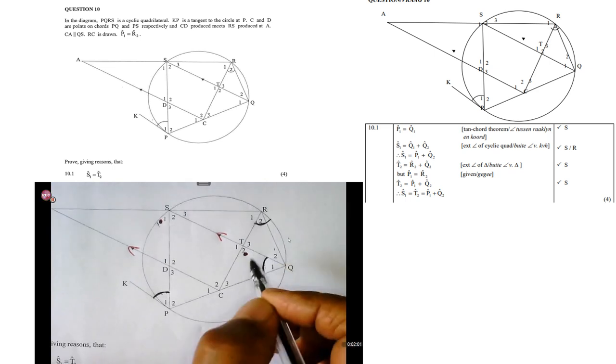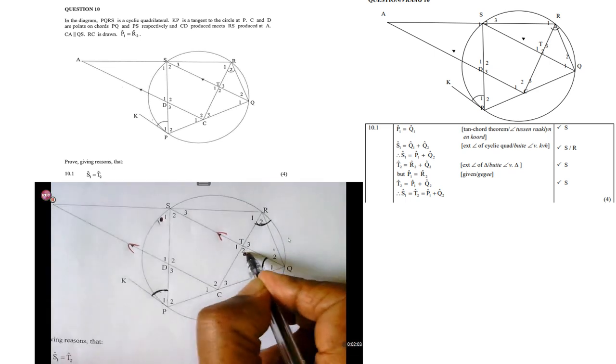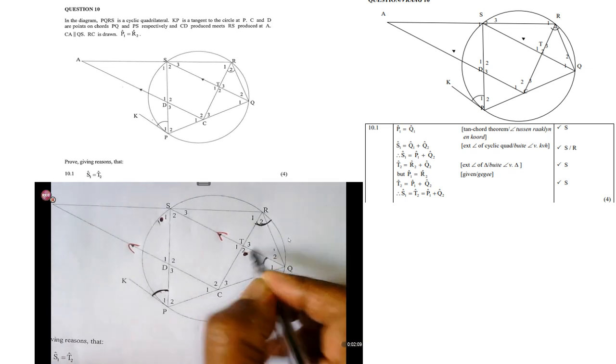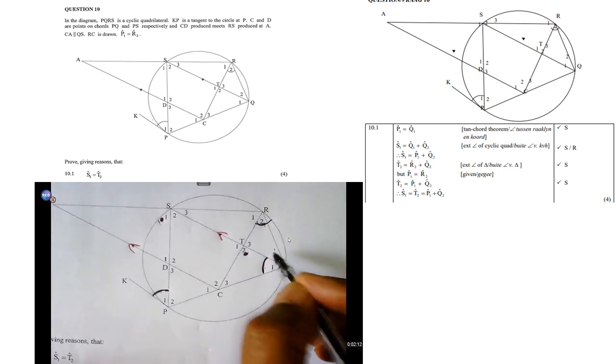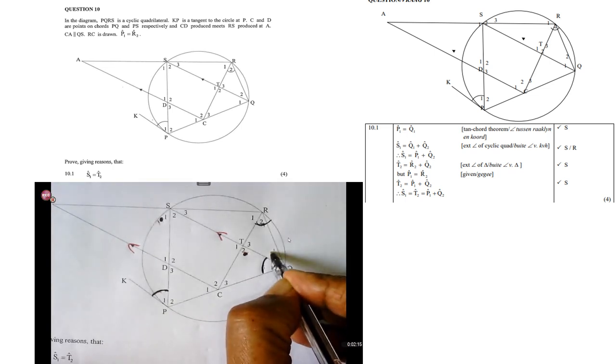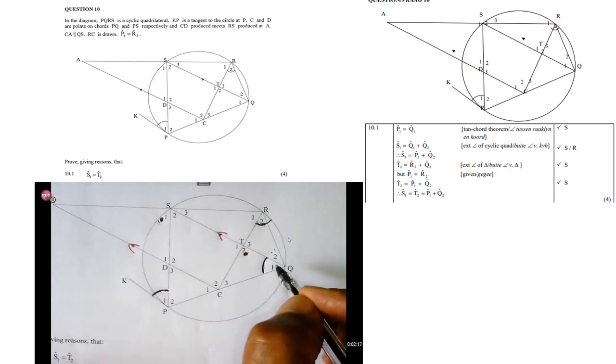Then T2, this T2, is equal to R2 plus Q2. What is the reason? Exterior angle of a triangle. We have to remember that.